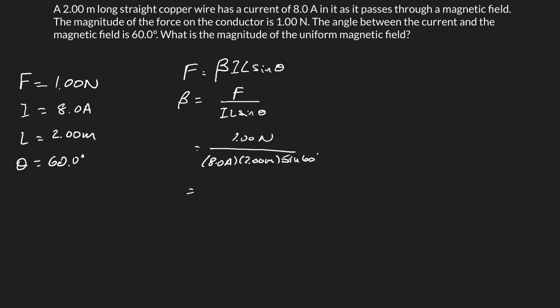By putting that into our calculator, we end up with 7.2 times 10 to the negative 2, and T for Tesla, units of the magnetic field.